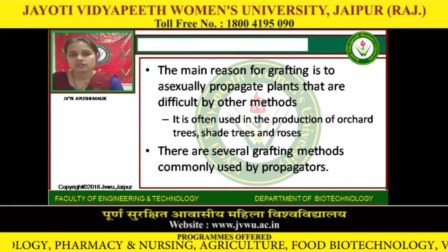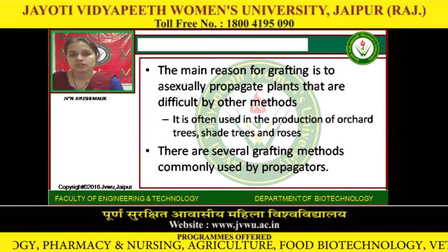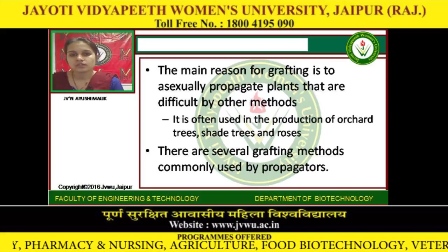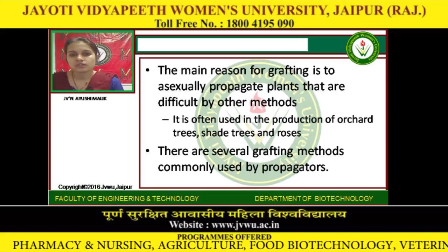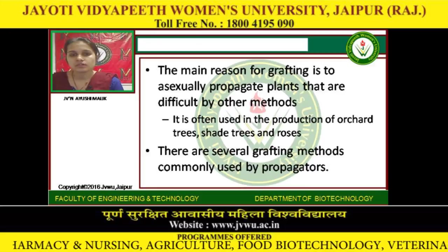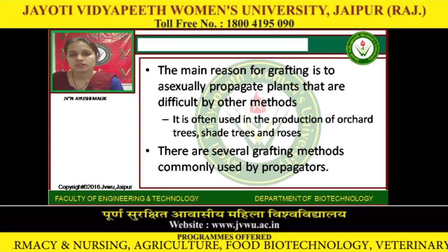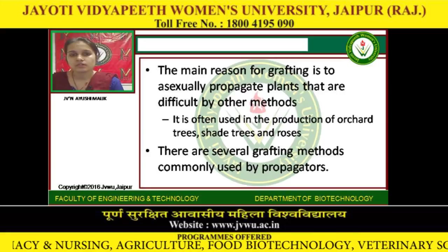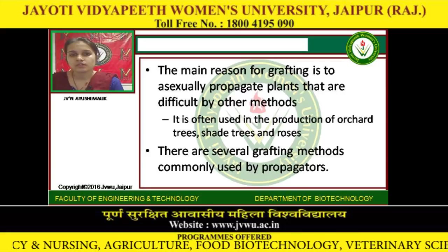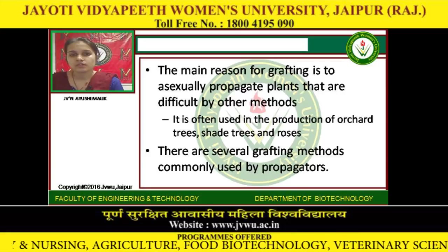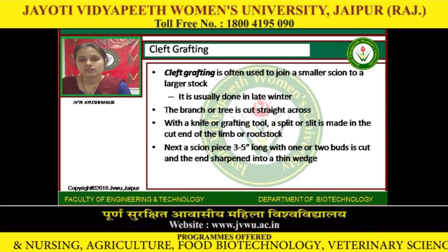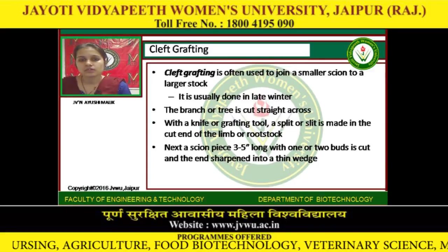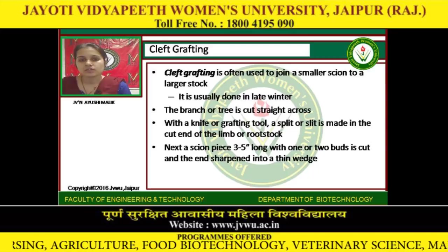The main reason for grafting is to propagate plants that are difficult to grow by other methods. It is often used in the production of orchard trees, shade trees, and roses. Cleft grafting is often used to join a small scion to a larger rootstock.